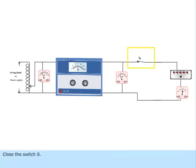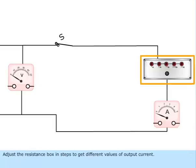Close the switch S. Adjust the resistance box in steps to get different values of output current.